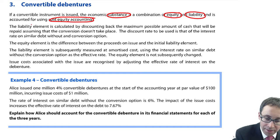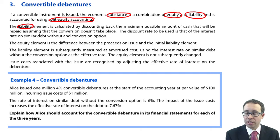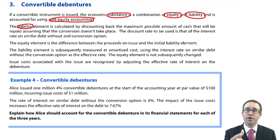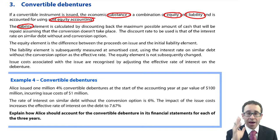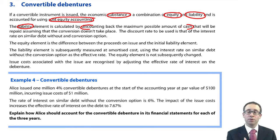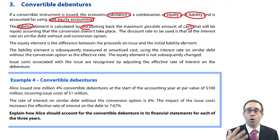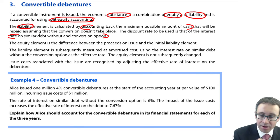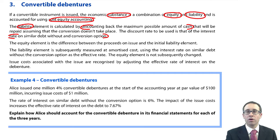To work out the liability initially, you make an assumption that everybody takes the cash — so even though it's a convertible debenture, you treat it as a simple loan. We assume no conversion takes place and everybody takes the maximum amount of cash possible. All you do is discount back all of the future cash flows at the normal market rate of interest — the rate on similar debt without any conversion option — just as if it were a simple loan.